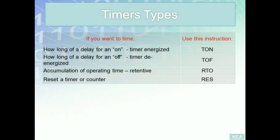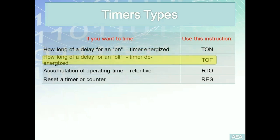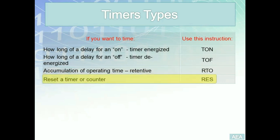Understanding the requirement you come across will enable you to choose the proper timer. If you want a timer to start timing once it's energized, use a timer on delay (TON). In some applications, you may want timing to start after the timer is disabled — that's when you use timer off delay (TOF). If you want retentive timing to accumulate operating time for a device, then RTO is what you need. An important concept is the reusability of timers — if you want to reuse a timer in your program, you must reset it, and one way to do that is using the reset instruction.